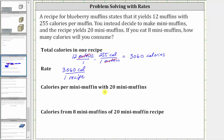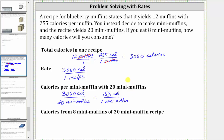Now let's determine the total calories per muffin with 20 mini muffins. If the recipe now yields 20 mini muffins, to find the calories per mini muffin, we take 3,060 calories and divide by 20 mini muffins. So 3,060 calories divided by 20 mini muffins — 3,060 divided by 20 is equal to 153, giving us a rate of 153 calories per mini muffin.